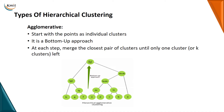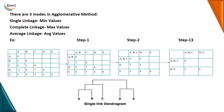In the agglomerative method you have three modes: single linkage, complete linkage, and average linkage. Single linkage takes the minimum values, complete linkage uses the maximum values, and average linkage uses the average values. So the three modes are: single linkage — minimum values, complete linkage — maximum values, average linkage — average values.